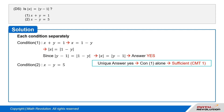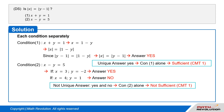Condition 2 tells us that x minus y equals 5. If x equals 3 and y equals negative 2, the answer is yes. But if x equals 4 and y equals 1, the answer is no. We do not have a unique answer, and therefore the condition is not sufficient by CMT1, which means you get both yes and no as the answer. It is not sufficient.